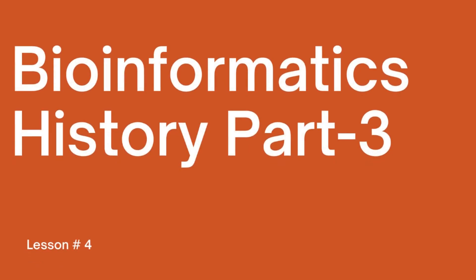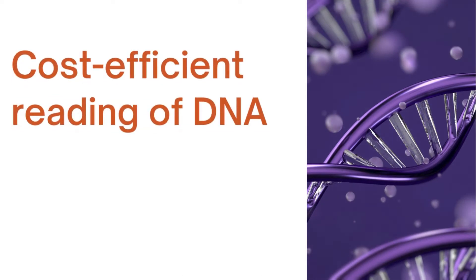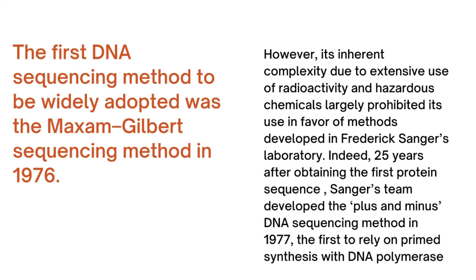Hi and welcome to this course lesson. For today we will continue with bioinformatic history and background, part 3. The first DNA sequencing method to be widely adopted was the Maxam-Gilbert sequencing method in 1976. However, its inherent complexity due to extensive use of radioactivity and hazardous chemicals largely prohibited its use.